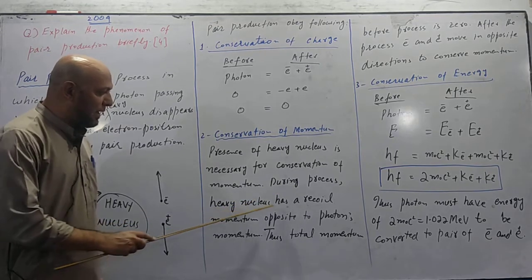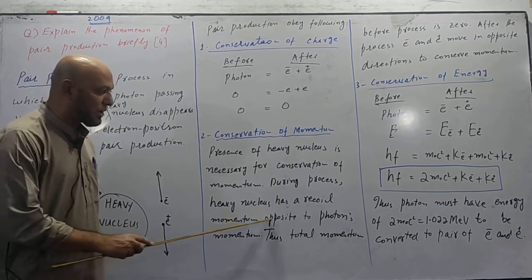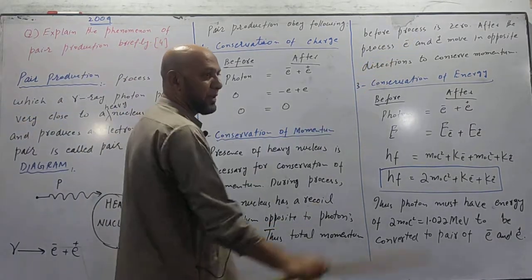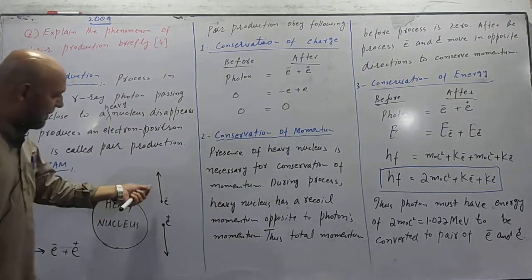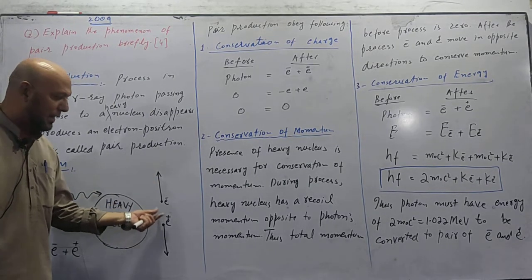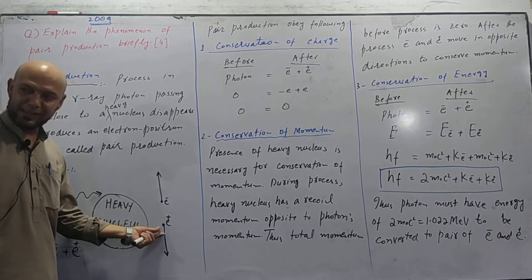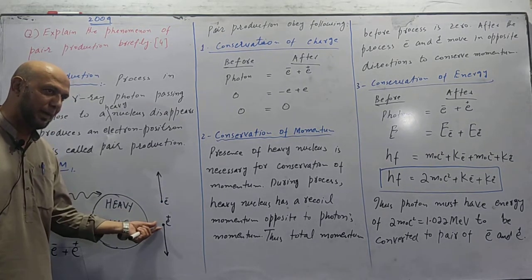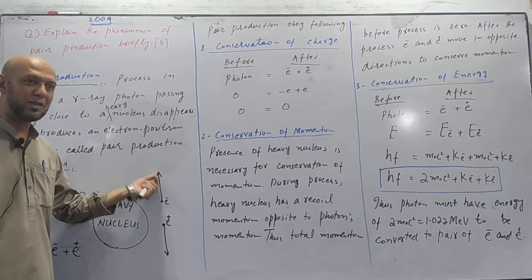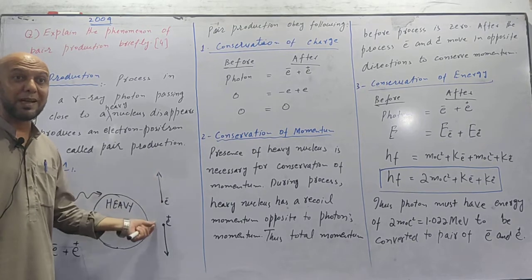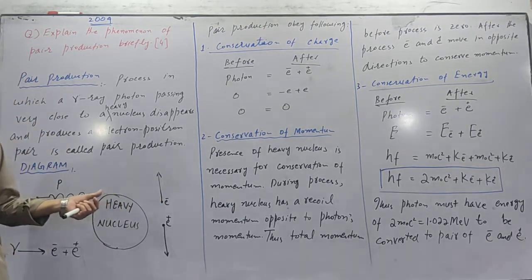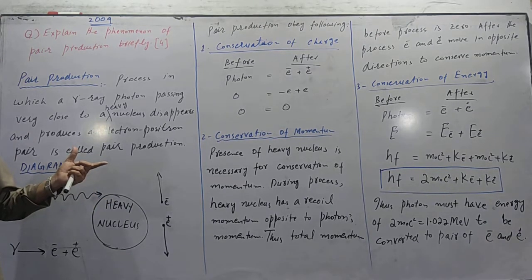During process, heavy nucleus has a recoil momentum opposite to photon's momentum. Thus total momentum before process is zero. After the process, both move in opposite directions. Both are identical particles. Their masses are same. Mass multiply by velocity is momentum. Both have same magnitude momentum. Direction is opposite. They travel in opposite direction so that momentum remains conserved.